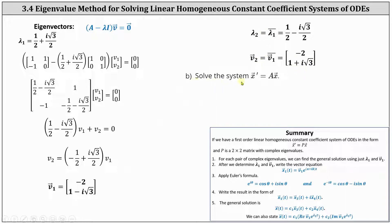For part b, we want to solve the system x prime equals A times x. Because we have two complex eigenvalues, this affects how we solve the system. For a first order linear homogeneous constant coefficient system of ODEs in the form x prime equals P times x, where P is a two by two matrix with complex eigenvalues, step one: for each pair of complex eigenvalues, we can find the general solution using just lambda sub one and vector v sub one.